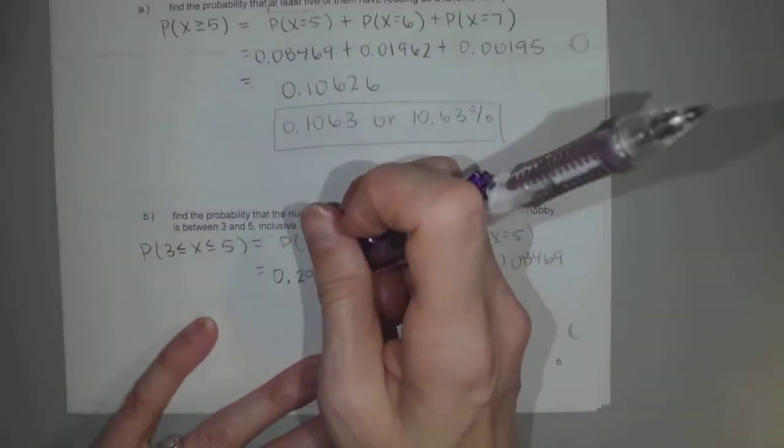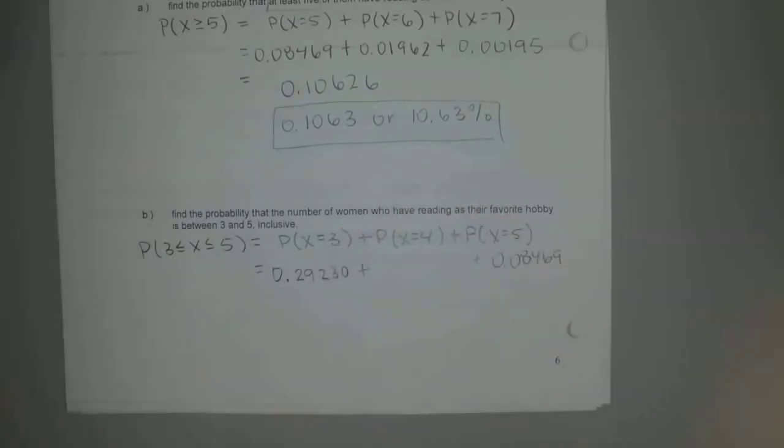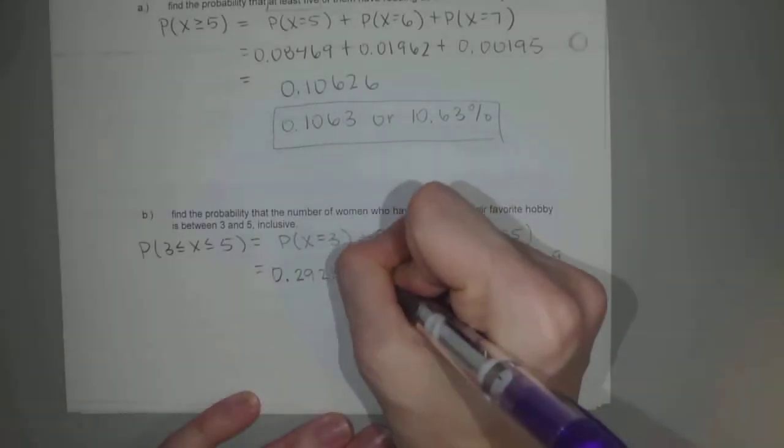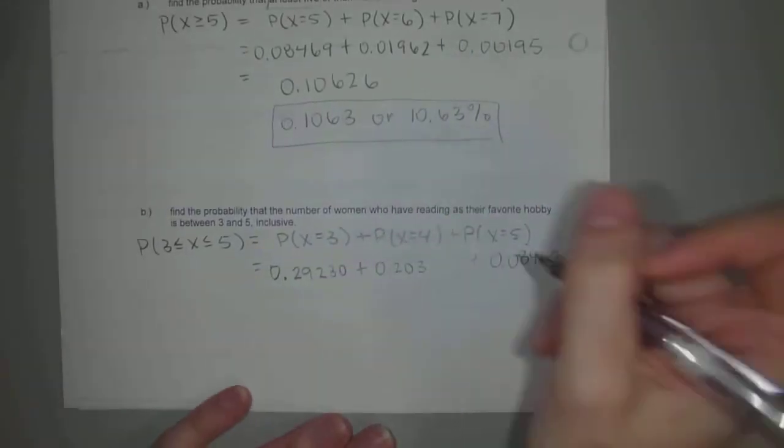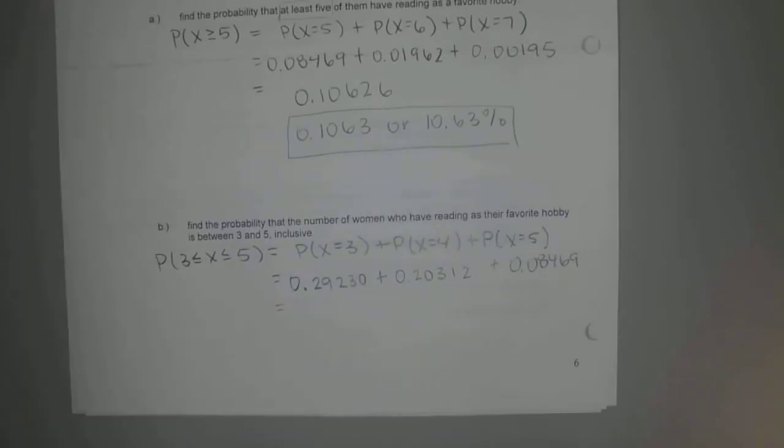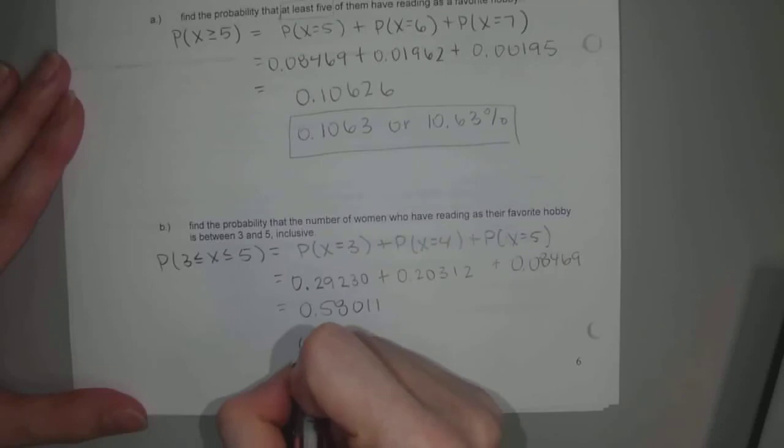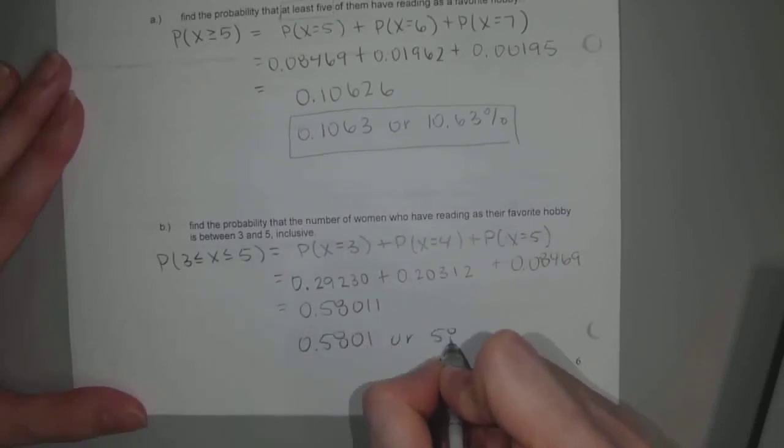Go ahead and hit second enter and have that pop up again. But change your last value of three to a four. What's the percent that four ladies have reading as their favorite hobby? 0.20312. Like that? Okay. So we'll add those three up. 0.29233 plus 0.20312 plus 0.08469. Do you get 0.58011 or 58.01%?